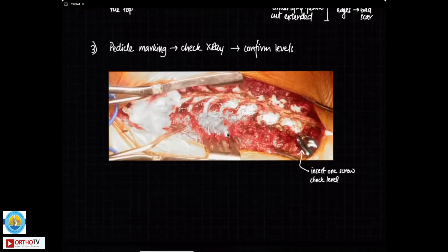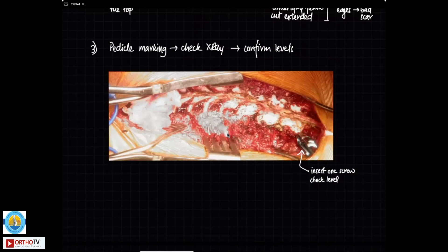Then the next step is pedicle marking. Usually whatever is the lower end approximately, I choose a particular pedicle level and then take the entry point and pass a screw and this is to confirm our level. So I insert one screw to check level and then you take an x-ray at this point and it will tell you whether this vertebra is T12 or T11 or whatever that is. Use the pedicle screw only as a marking point for your vertebral levels.